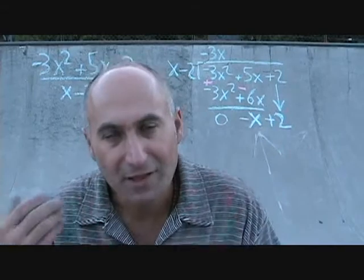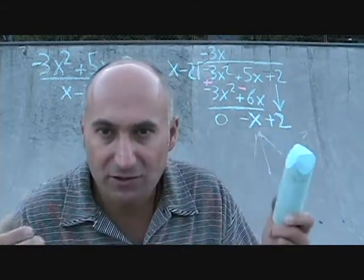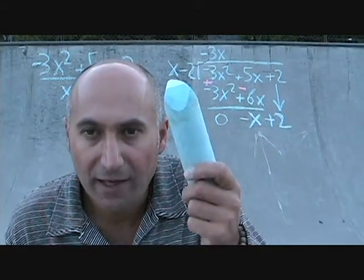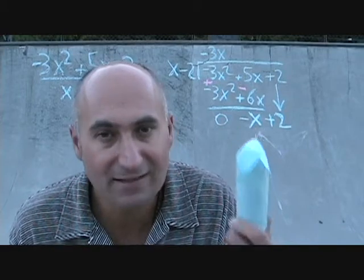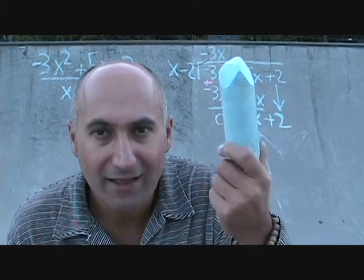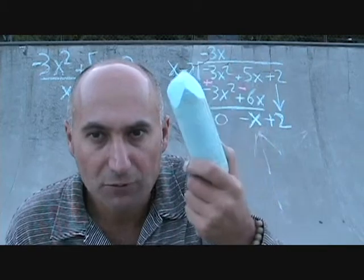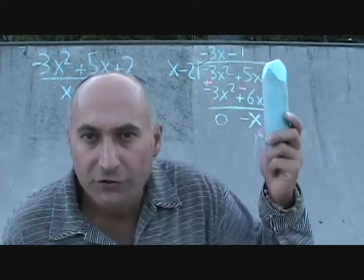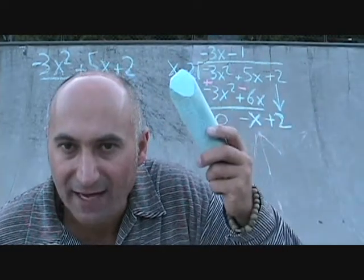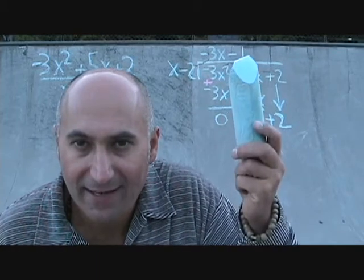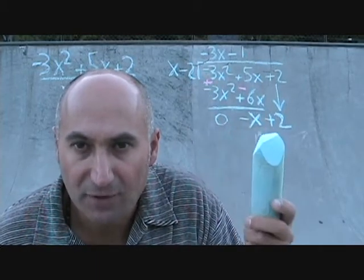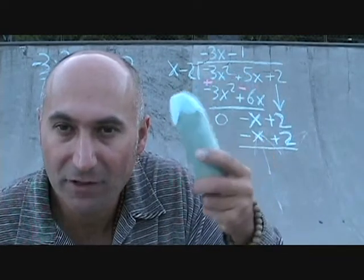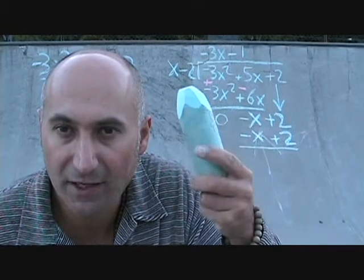The question you should be asking — and this should become automatic — is: what do you multiply x by to give you negative x? The answer is negative 1. So you put negative 1 up here and multiply it through: negative 1 times x is negative x, and negative 1 times negative 2 is positive 2. Write those down.